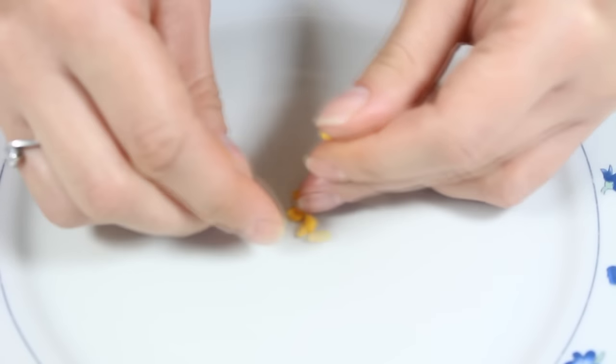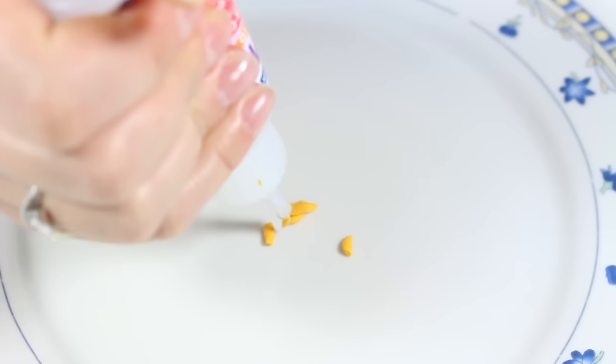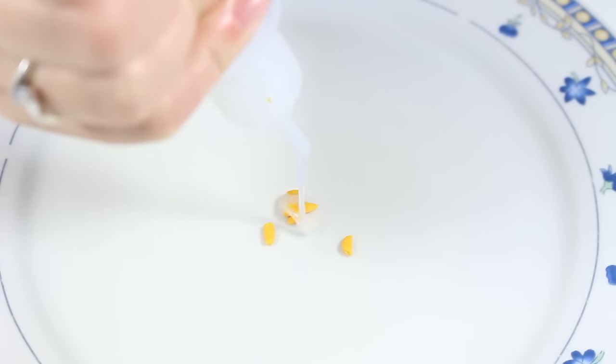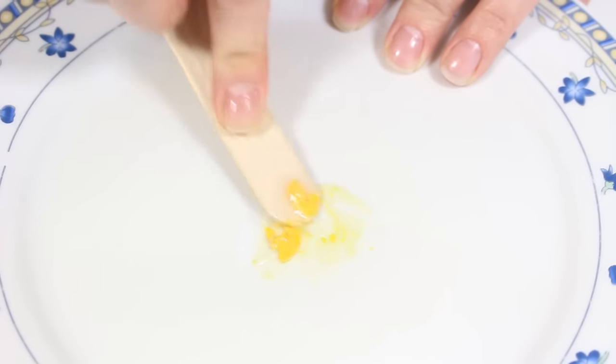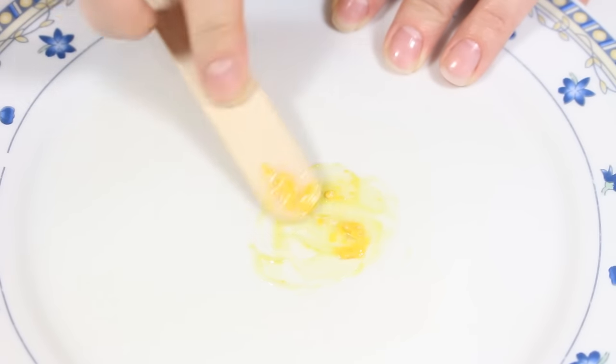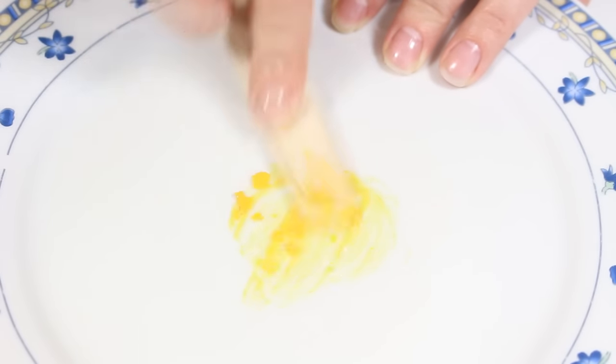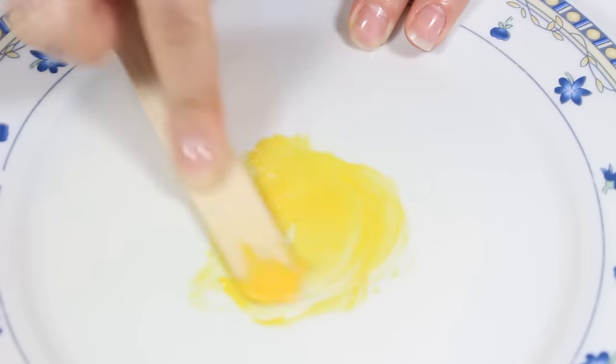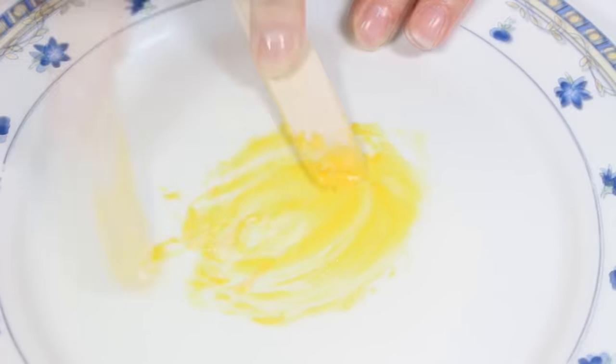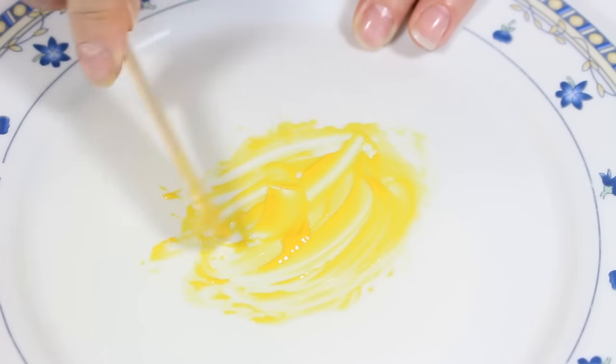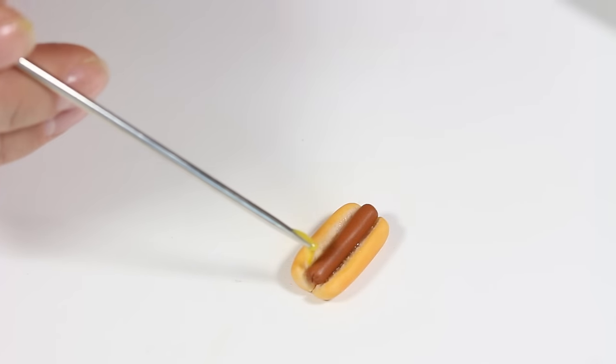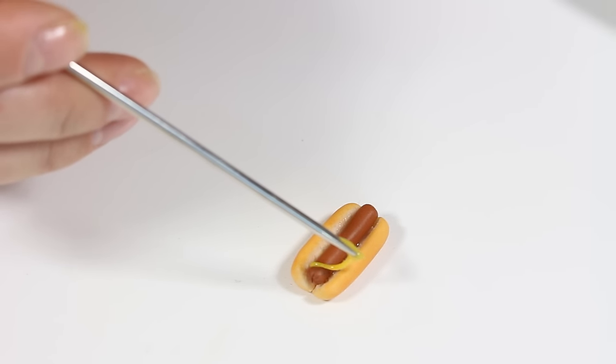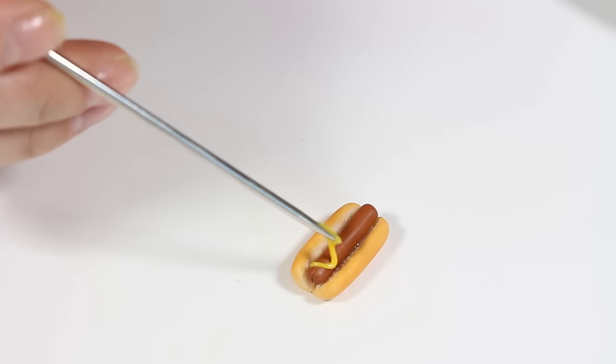Finally, I'm mixing a tiny piece of yellow clay with translucent liquid to get the mustard. I'm going to pour that on top of the sausage and bake my creation according to the clay instructions.